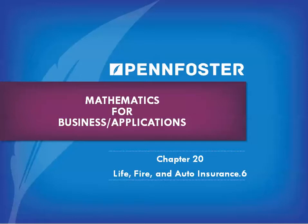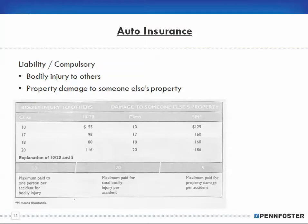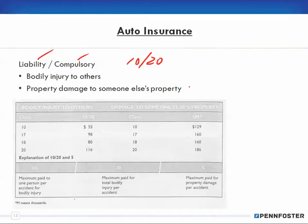Now let's get down to auto insurance. With auto insurance there's basic auto insurance, called liability insurance or compulsory insurance — these terms are interchangeable. It covers two different aspects: bodily injury to others, which can be expressed as 10/20, and property damage to someone else's property, expressed as 5.